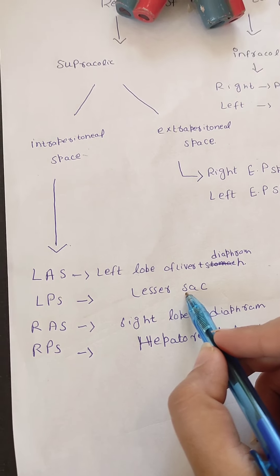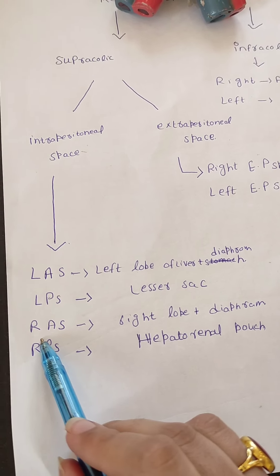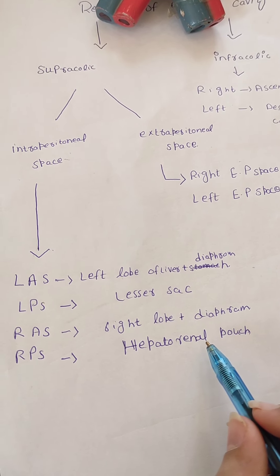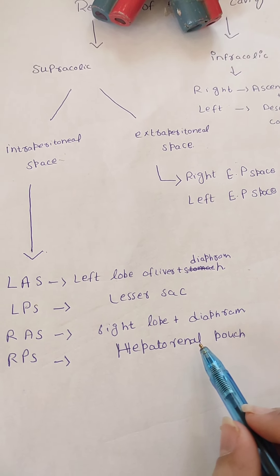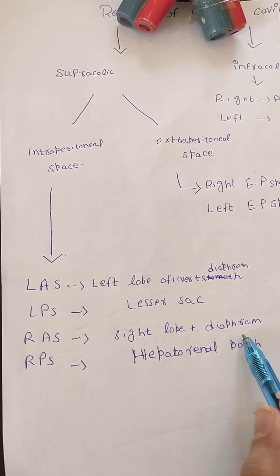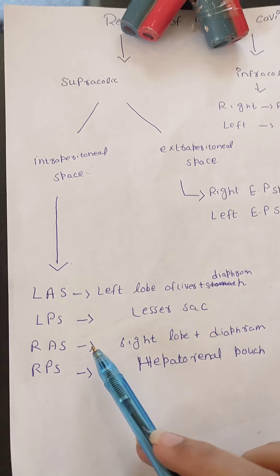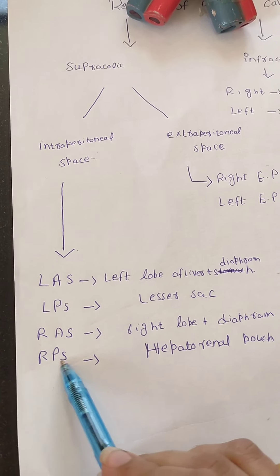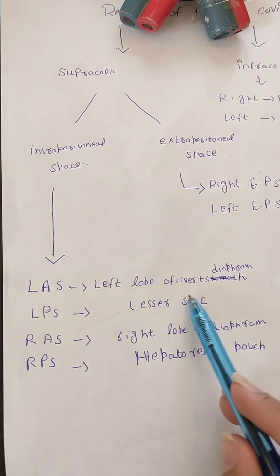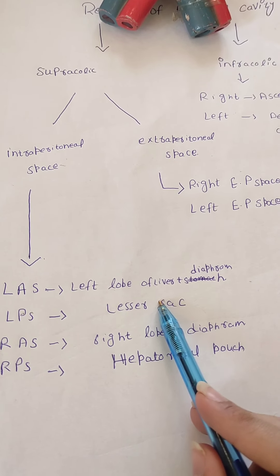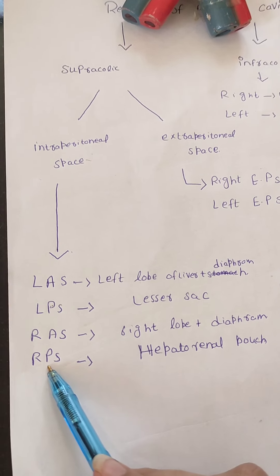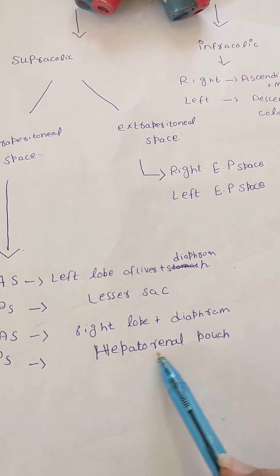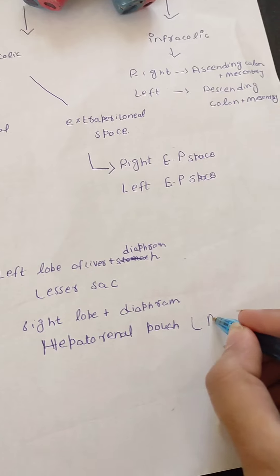The left posterior space is known as the lesser sac. The right anterior space is between the right lobe of liver and the diaphragm. All intraperitoneal spaces are formed between the liver lobes and the diaphragm. The right posterior space — unlike the left posterior space which is the lesser sac — is a very important pouch. It is called the hepatorenal pouch or Morrison's pouch.